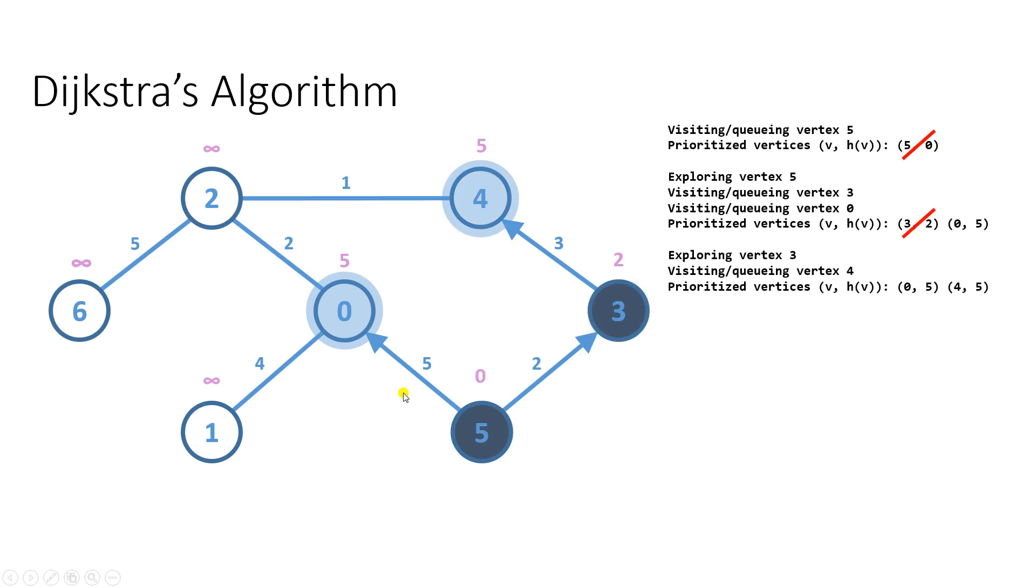In the next step, we explore vertex 3 and visit vertex 4. Vertex 4 is calculated to have its total cost of 5. In the next step, we will explore vertex 0, and at the same time visit vertices 1 and 2, and also calculate their costs, which are 9 for vertex 1 and 7 for vertex 2.